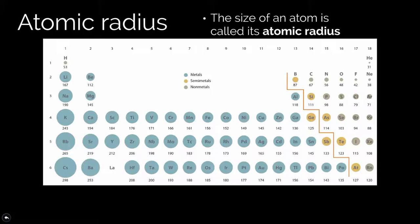Next, let's talk about the atomic radius. When we're talking about the radius of an atom, we're really just talking about the size of an atom. We measure this by the distance from the nucleus to the outer energy level, and it's measured in nanometers. Looking at the chart, if we focus on lithium to sodium, notice that we're getting bigger along the way. Lithium is 167 nanometers, sodium is 190 nanometers, then potassium at 243, rubidium 265, and cesium 298.